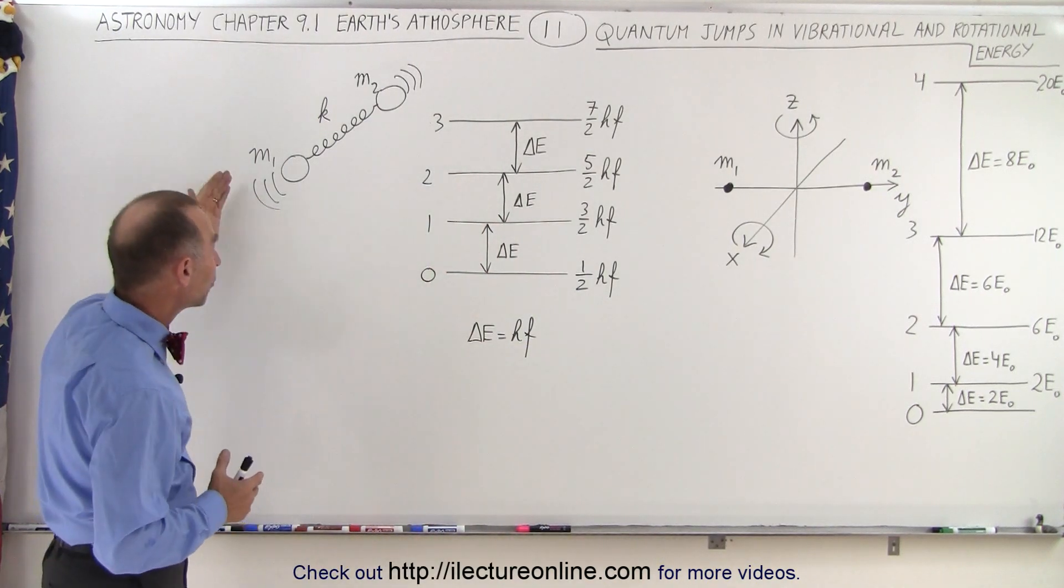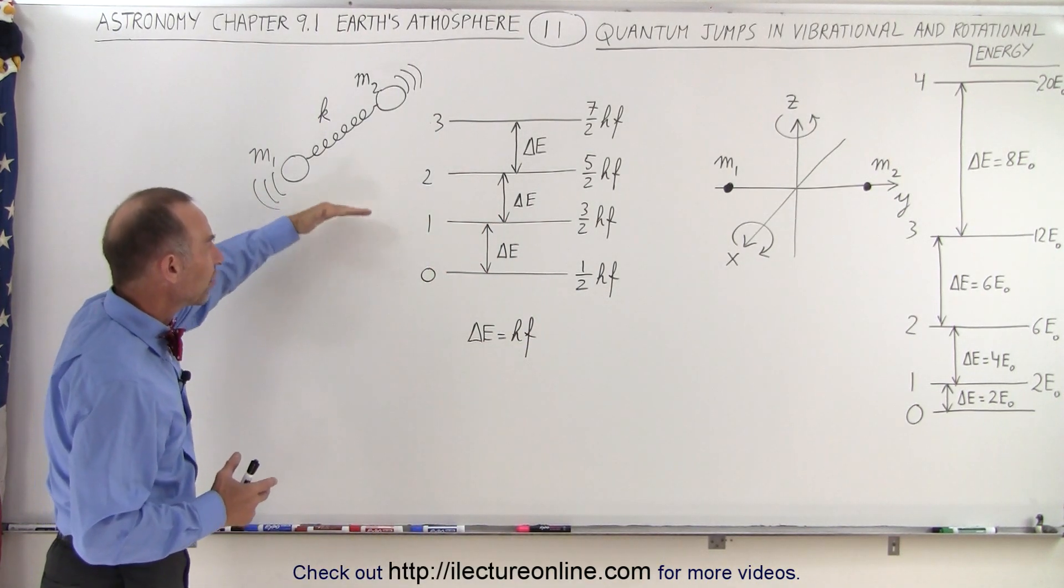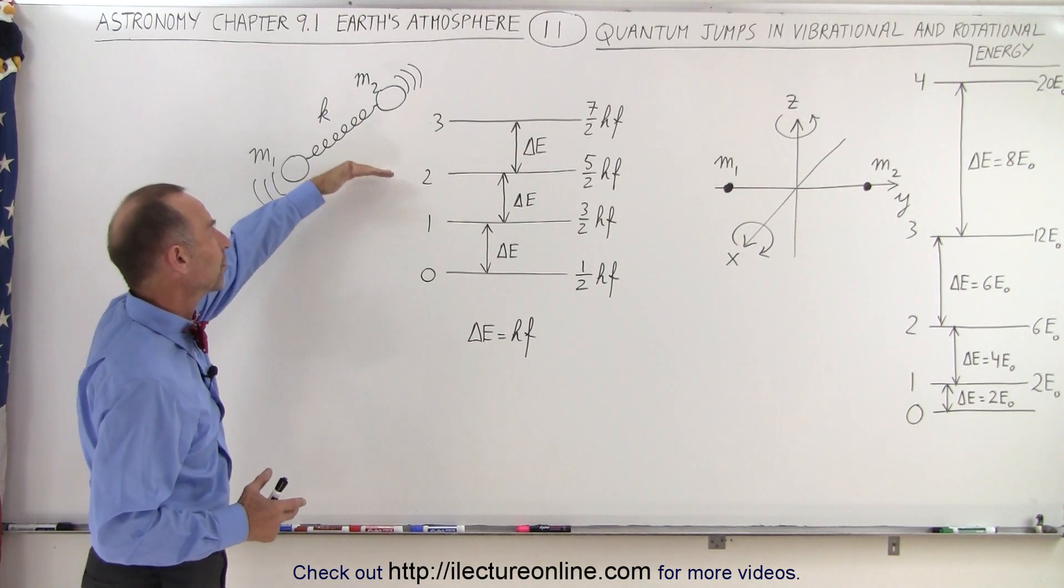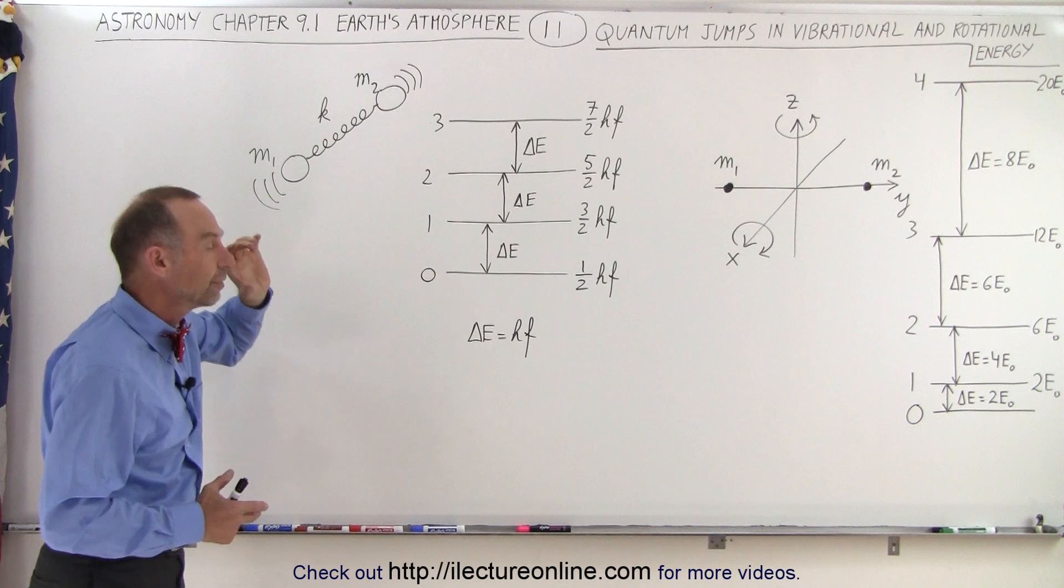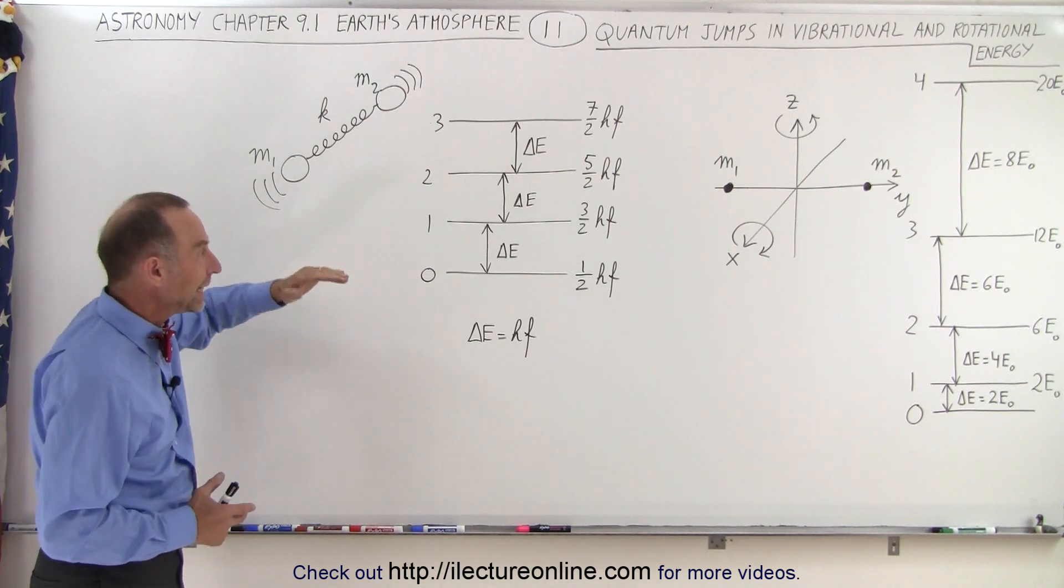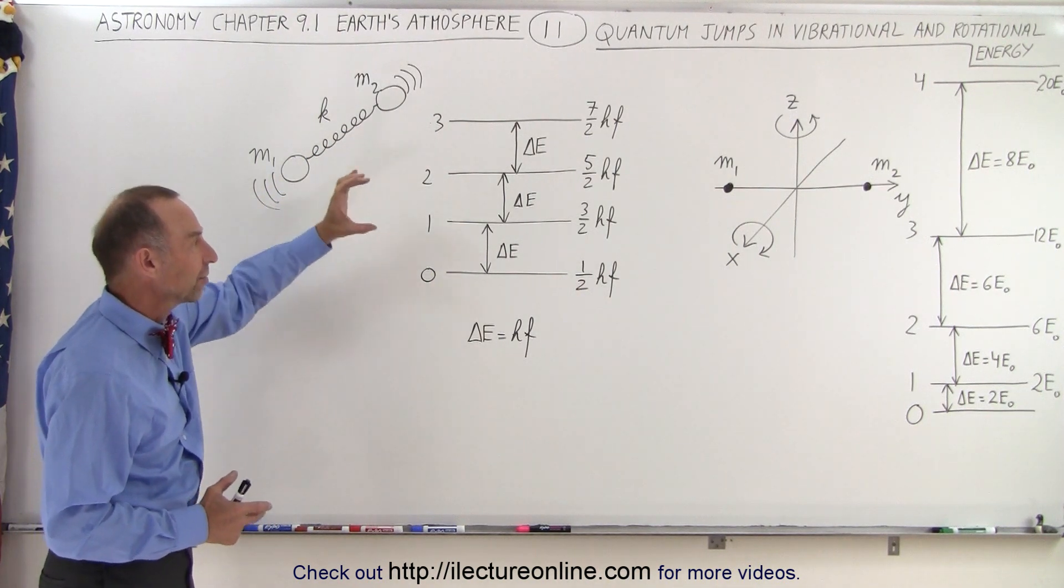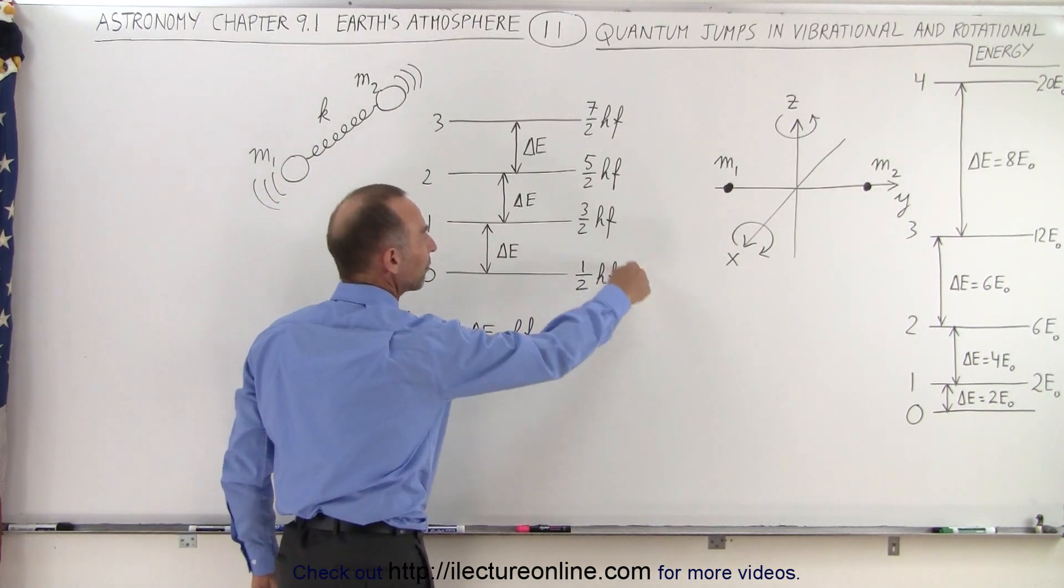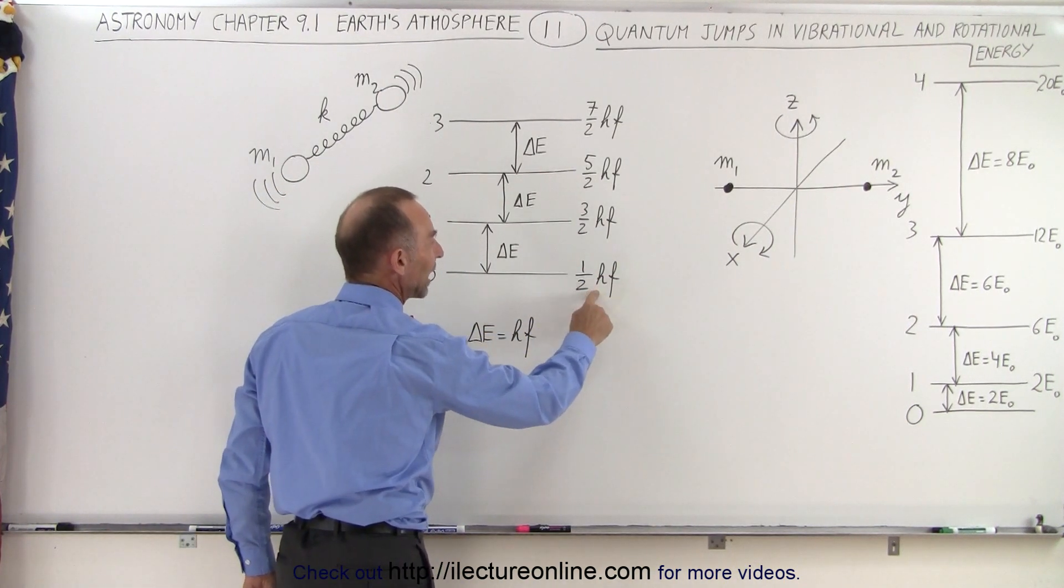What's interesting about the vibrational mode is that the various energy levels from the ground state to the first excited mode to the second excited mode to the third excited mode, the difference in the energy between each of the levels is exactly the same. Notice that the ground state, the energy contained within the vibrational mode, is one-half times h times f.